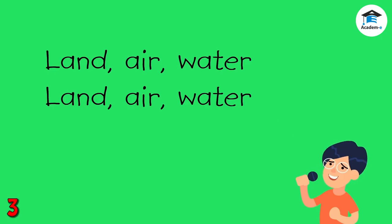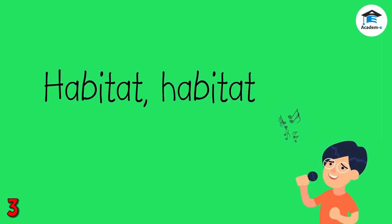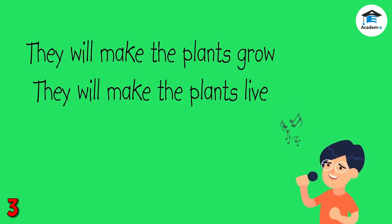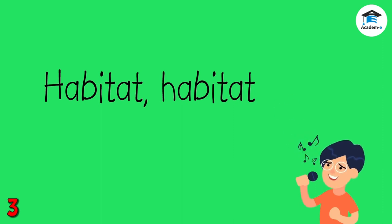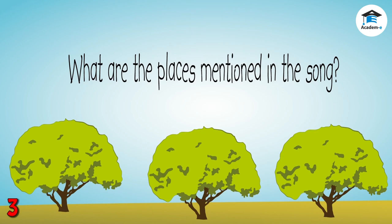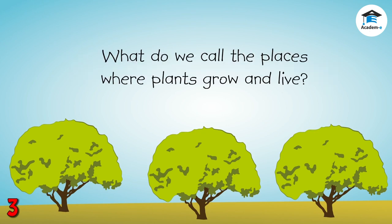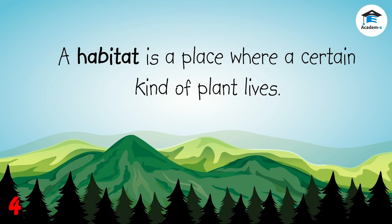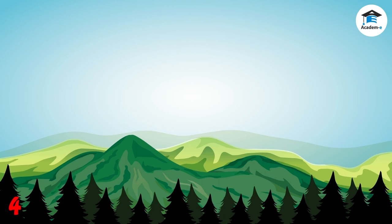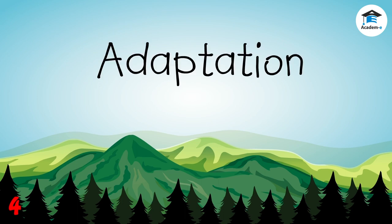Before we start our lesson, let us sing a song. What are the places mentioned in the song? What do we call the places where plants grow and live? The place where a certain kind of plant lives is called a habitat. Each plant from a different place has different special features that allow it to survive in its environment. This is called adaptation.